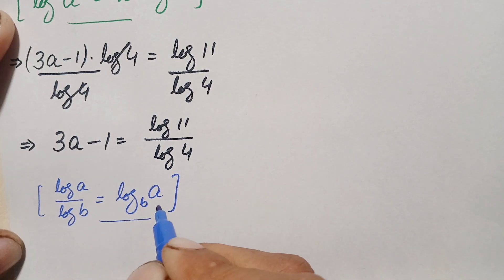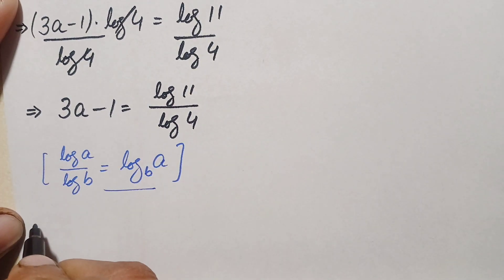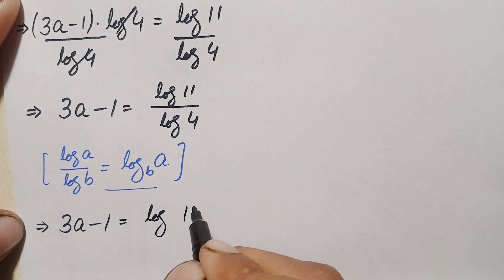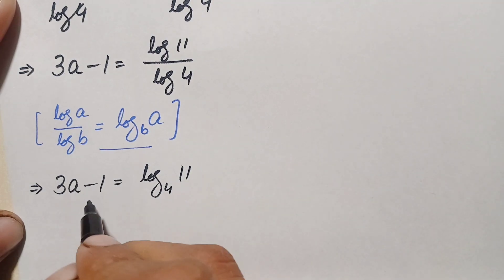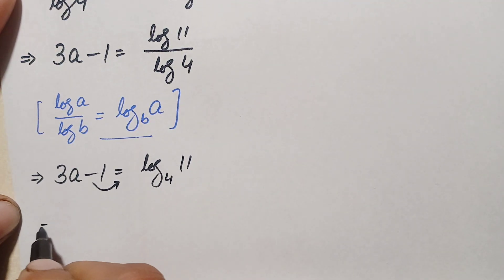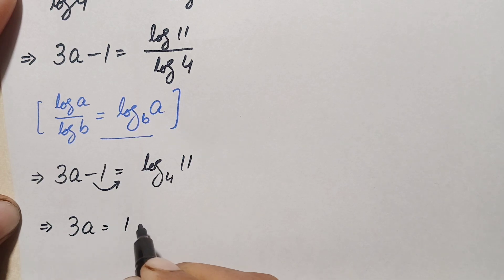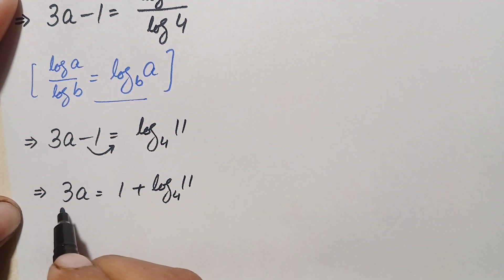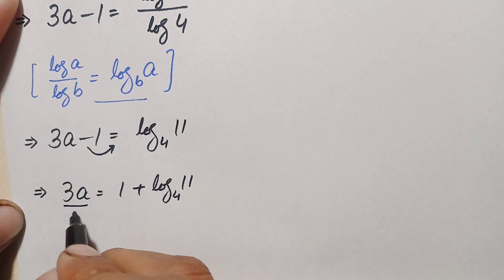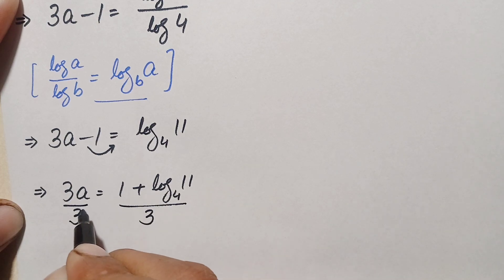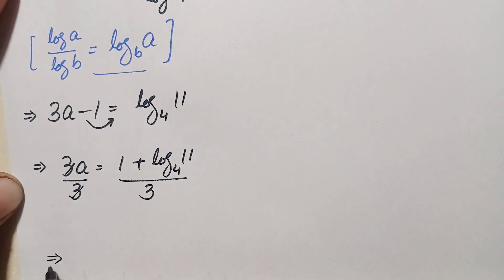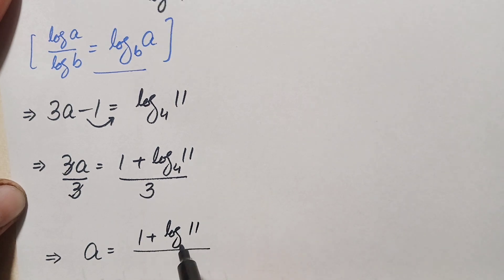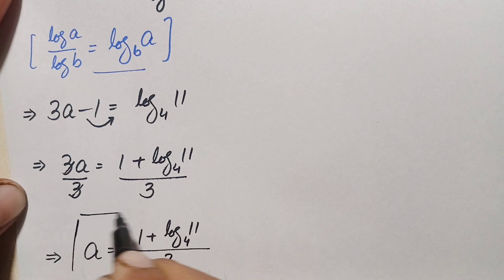Applying the change-of-base identity, the right hand side becomes log base 4 of 11. So 3a − 1 equals log₄(11). Moving the −1 to the right hand side gives 3a equals 1 plus log₄(11). Dividing both sides by 3, we get a equals (1 + log₄(11)) / 3, which is our answer.